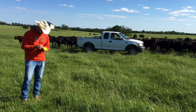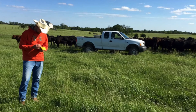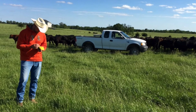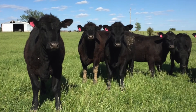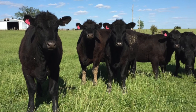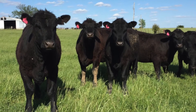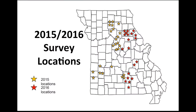We set out to study these interactions by surveying 46 tall fescue pastures over the 2015 and 2016 growing seasons. At each location, one plot per 10 acres was established in April and surveyed every two weeks for 24 weeks. So if a pasture was 80 acres, it had 8 plots. These 46 locations are shown on the map presented.